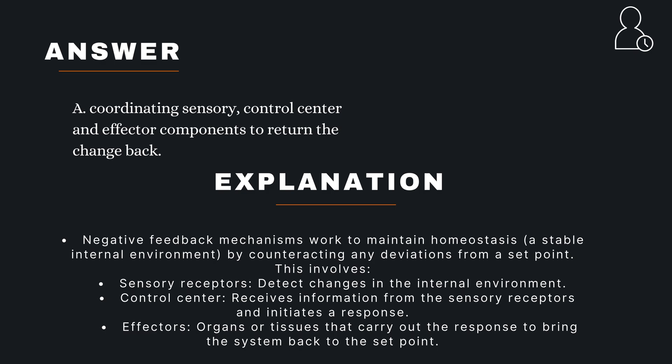Explanation: Negative feedback mechanisms work to maintain homeostasis, a stable internal environment, by counteracting any deviations from a set point. This involves sensory receptors that detect changes in the internal environment, a control center that receives information from the sensory receptors and initiates a response, and effectors — organs or tissues that carry out the response to bring the system back to the set point.